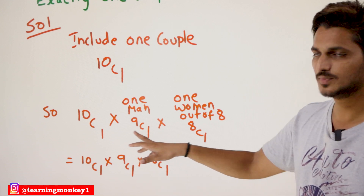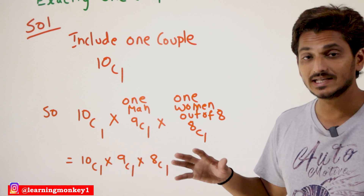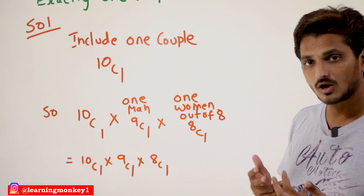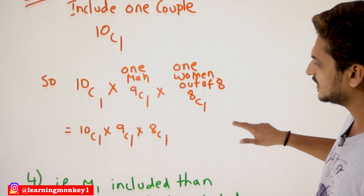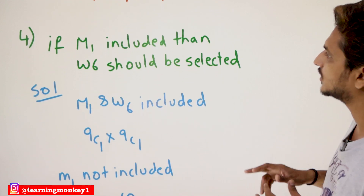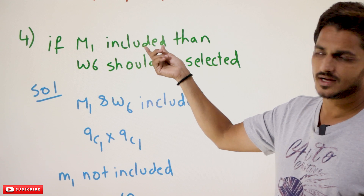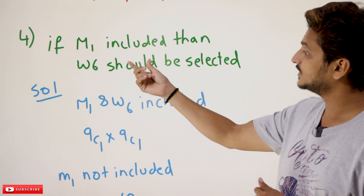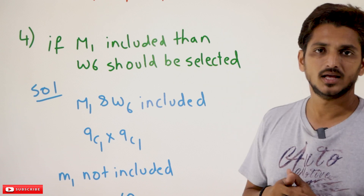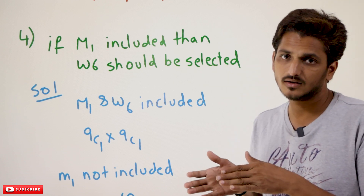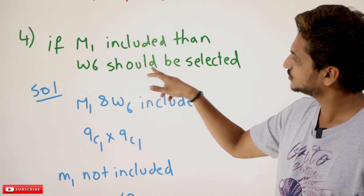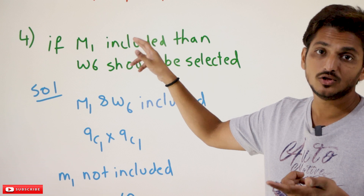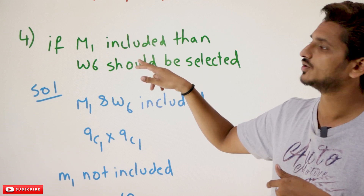These are the total combinations you have to choose exactly one couple. Coming to the next example, which is also a bit complex to understand. The condition is: if M1 is included, then W6 should be included. This is an if-then statement: if this happens, then this should happen. If M1 is not included, you may or may not include W6 — it is not a condition in that case.